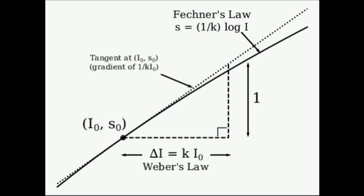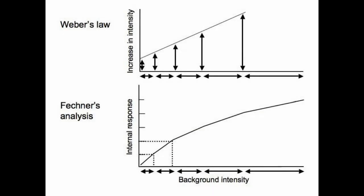Vision. The eye senses brightness approximately logarithmically over a moderate range, but more like a power law over a wider range, and stellar magnitude is measured on a logarithmic scale.